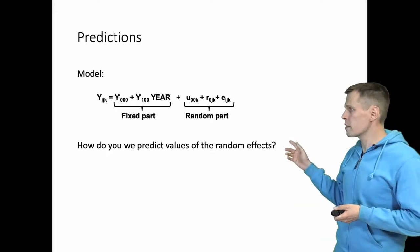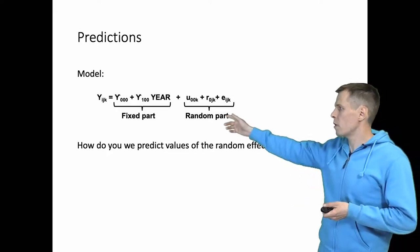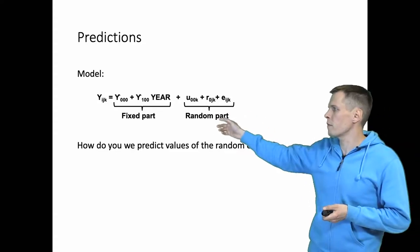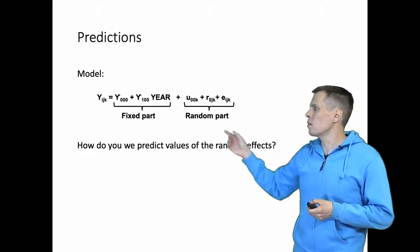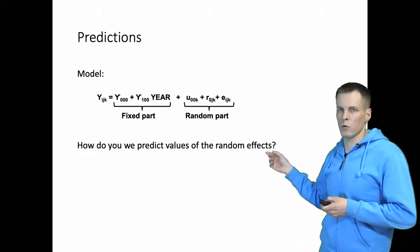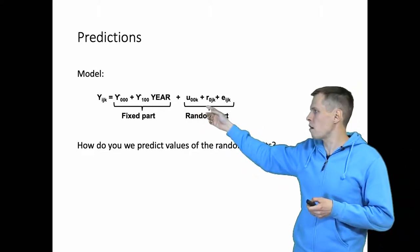So assume we have this model. We have a random part here with three random effects, it's a random intercept model, three levels, and we have the effect of year. How do we predict the values of the random effects U_00K and R_0JK?